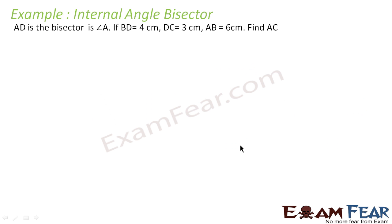Let's take some examples of internal angle bisector. The question says AD is the bisector of angle A. So we have got this triangle ready made for you. AD is the angle bisector of angle A. BD is equal to 4, DC is equal to 3, AB is equal to 6. Find AC.